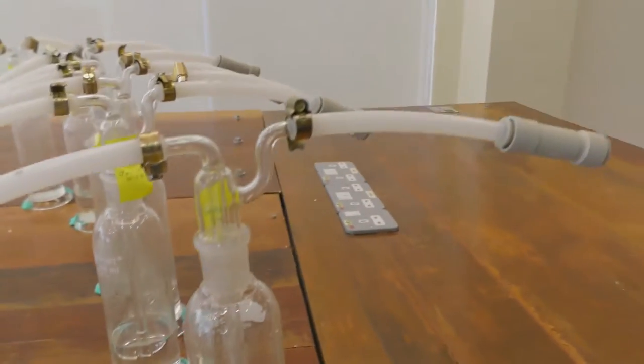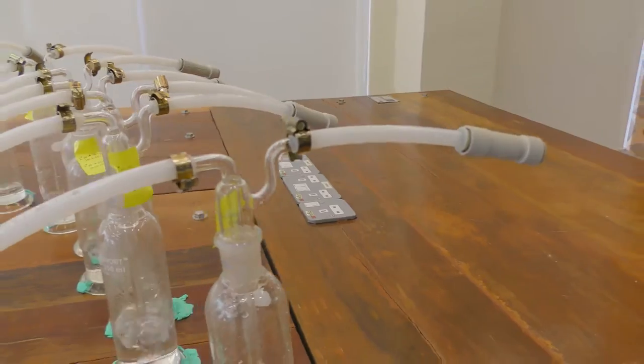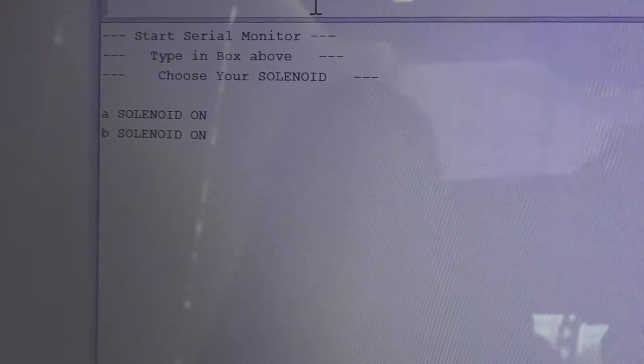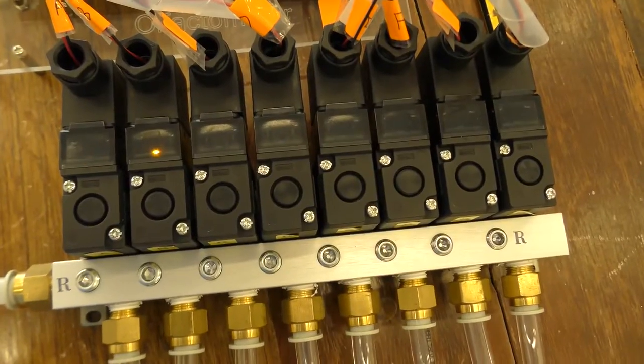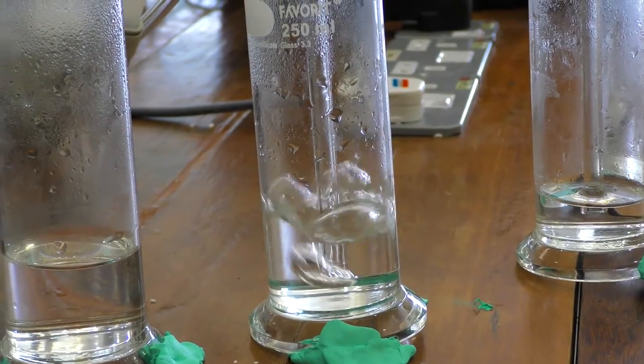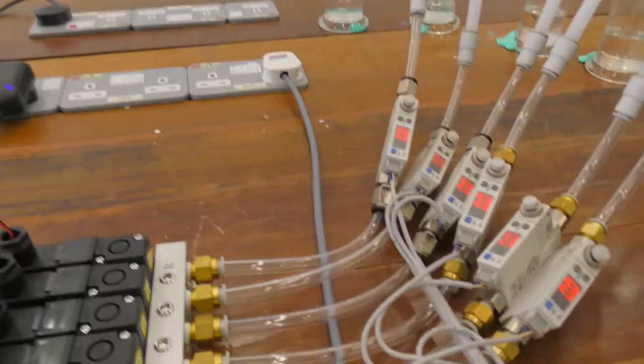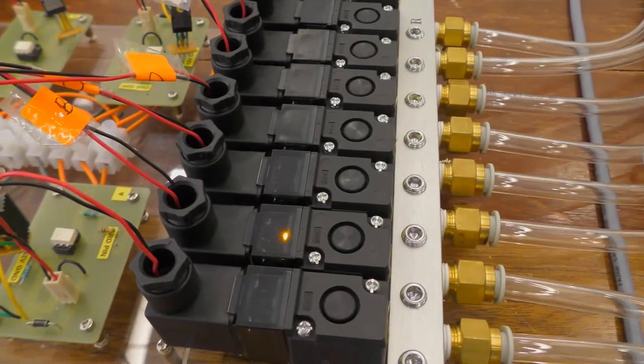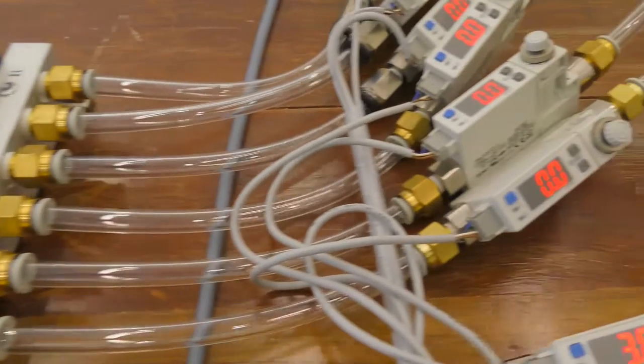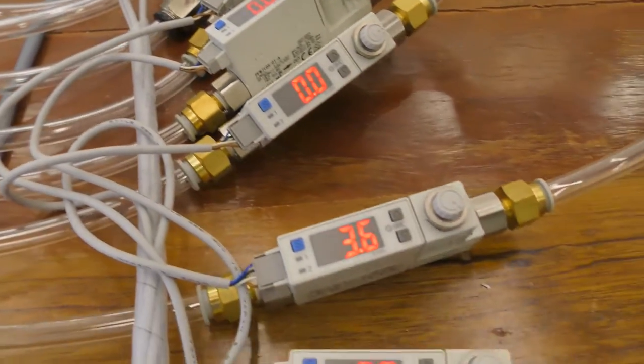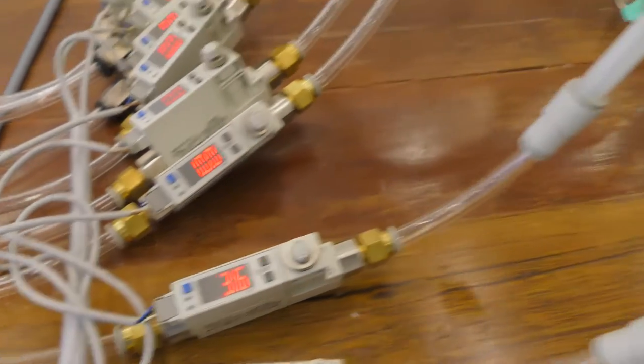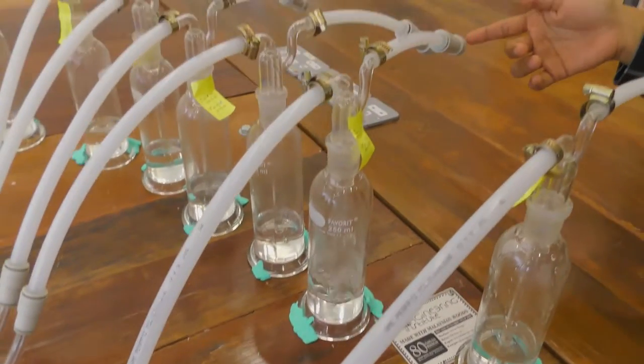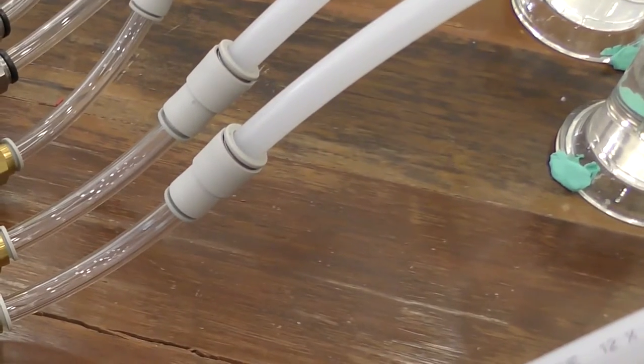If we change to the character B, valve A will switch off and valve B will switch on. At this point, the flow rate is 3.6 liters per minute and the user can smell at the glass tube. This is the process of the olfactometer system.